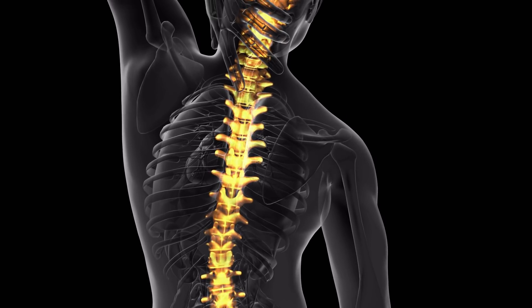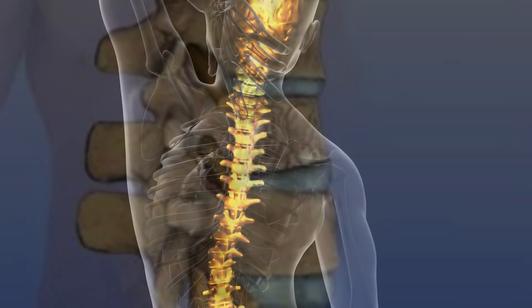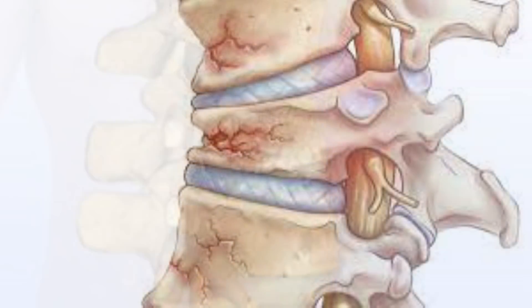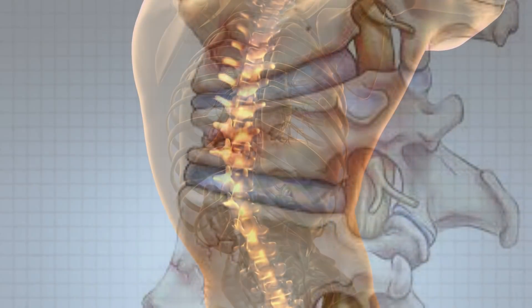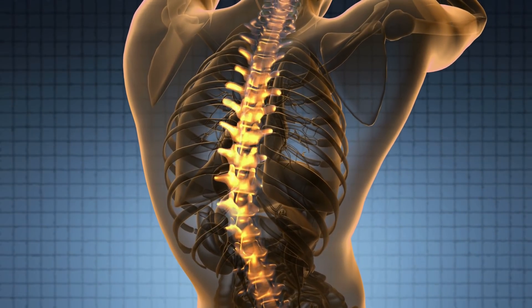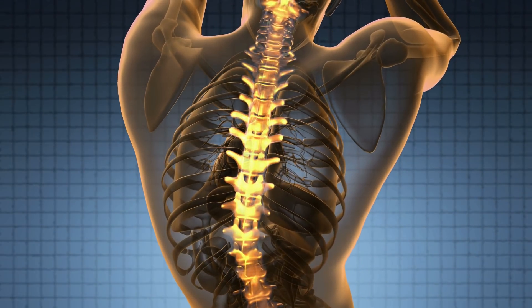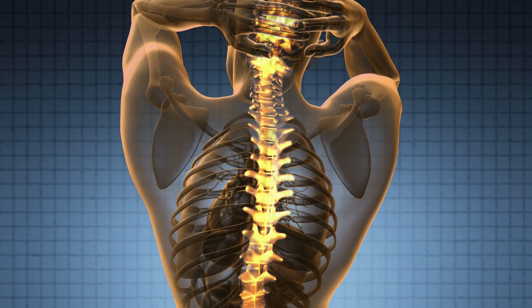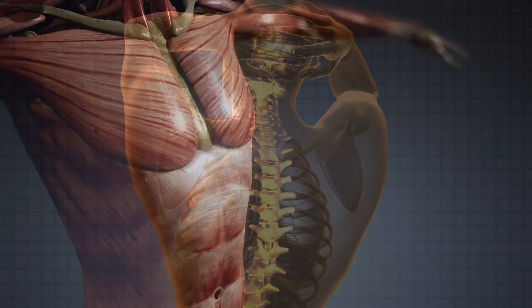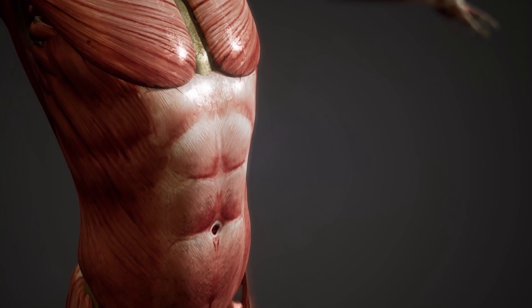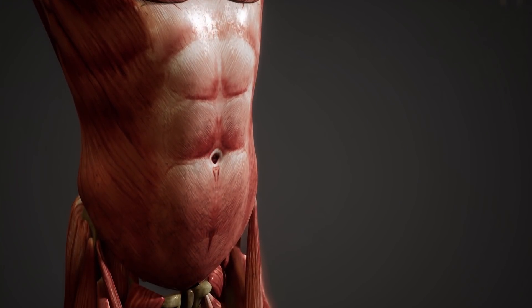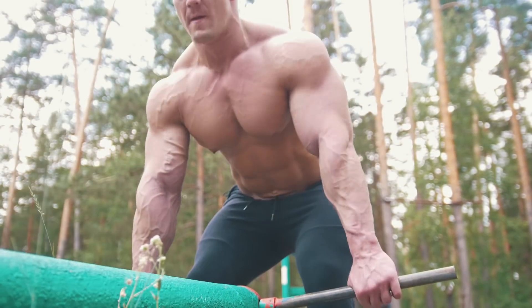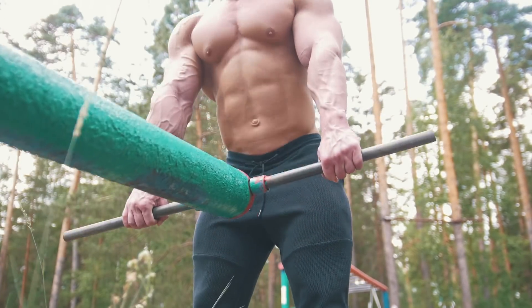Osteoporosis can cause vertebrae to collapse completely — either symmetrically or in a wedge-shaped pattern — causing abnormal permanent curvature of the spine. By the time someone has reached their 60s, their bones are not as strong as they were at 40 or even 50. There is also muscle loss, called sarcopenia. Bone and muscle loss can be slowed and even reversed with weight training, but no heavy squats or deadlifts past the age of 40, as you risk serious damage to the lumbar vertebrae.